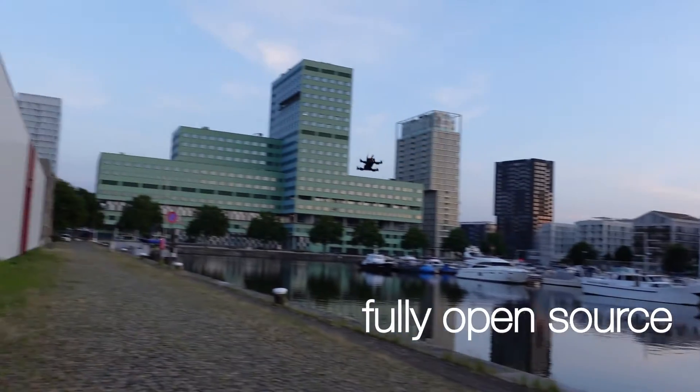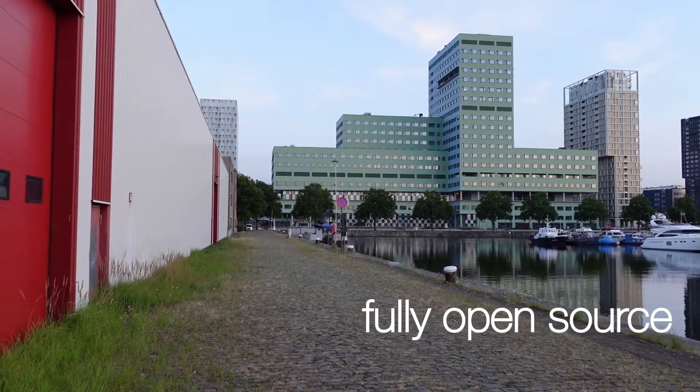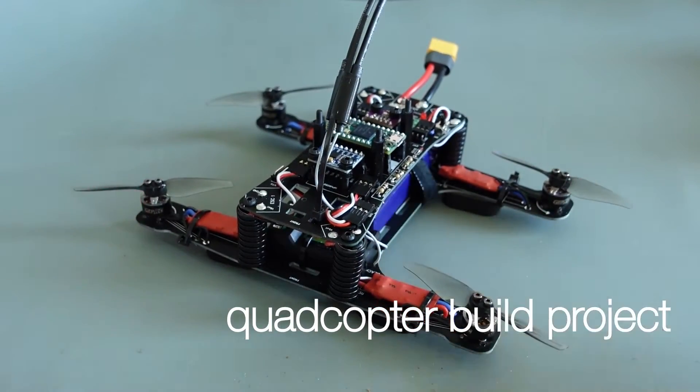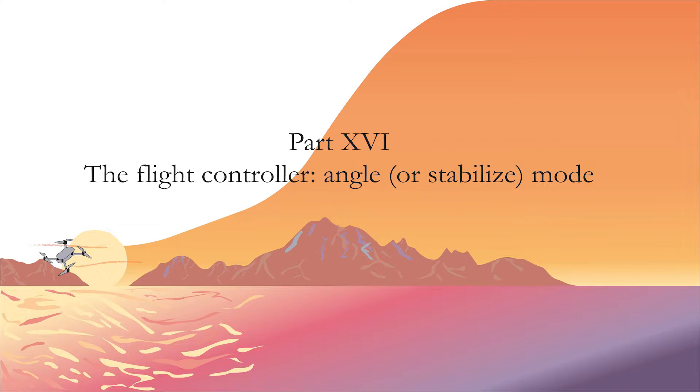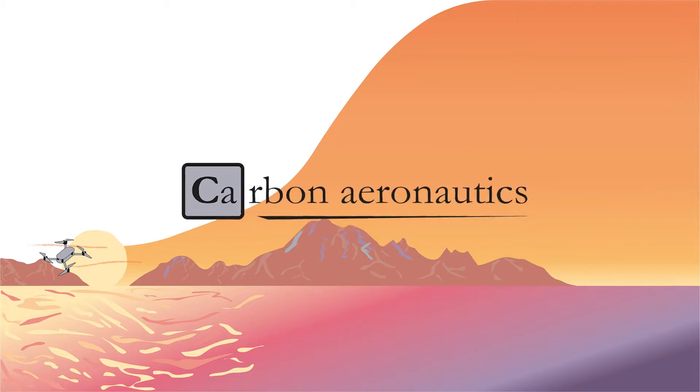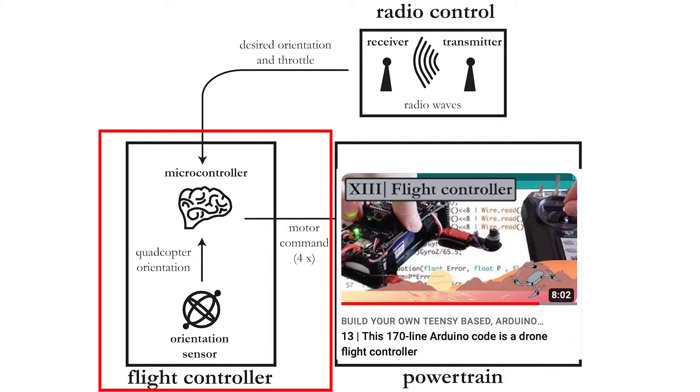Welcome to the next video in our series explaining how to build your own quadcopter drone. Today we will have a look at an angle or stabilized mode flight controller. This is an advanced version of the rotation rate flight controller we saw in part 13.